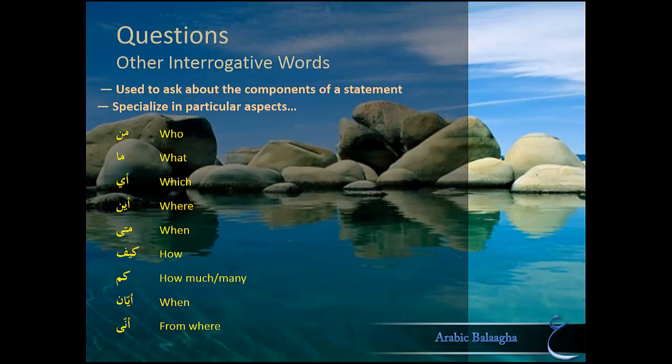The rest of the interrogative words are pretty simple and you would have come across them in grammar. They can only be used to ask about the components of a sentence, not the truth of a statement as a whole. Each specializes in a different aspect: مَنْ (who), مَا (what), أَيٌّ (which), أَيْنَ (where), مَتَى (when), كَيْفَ (how), كَمْ (how much), أَيَّانَ (when, typically used for grand and important things, like أَيَّانَ يَوْمُ الْقِيَامَةِ — when is the day of judgment?), and أَنَّى (from where, like أَنَّى لَكِ هَذَا — from where did you get this?).